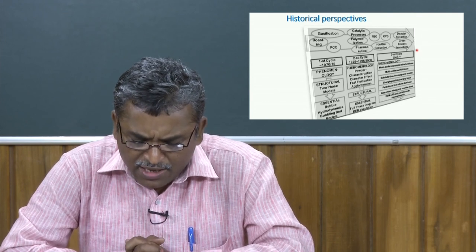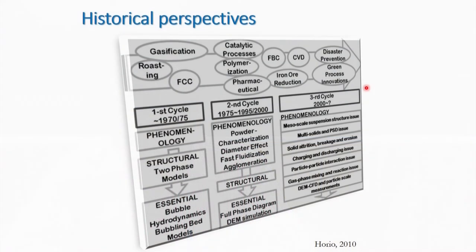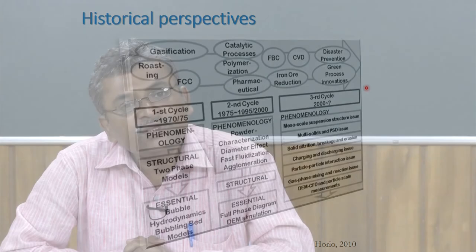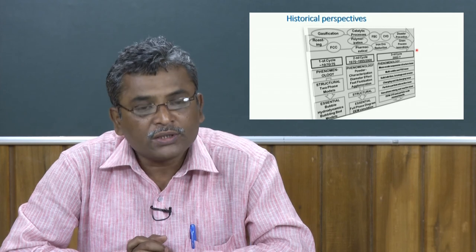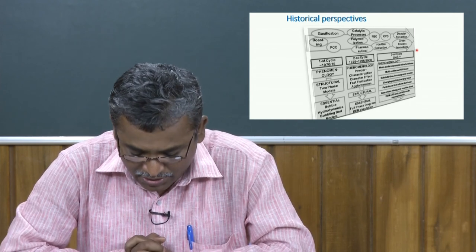From 1975 onward to 1995 and 2000, several important developments occurred, particularly regarding the classification of solid particles used. Geldart classified solid particles in different ways — types A, B, C, D — different classifications of solid particles. Research also covered the diameter effect of solid particles, fast fluidization with coarser particles, and whether using finer particles leads to agglomeration. These were reported by different investigators.